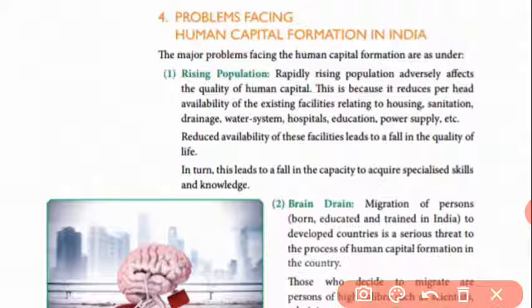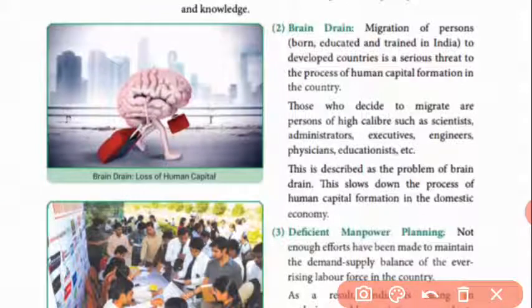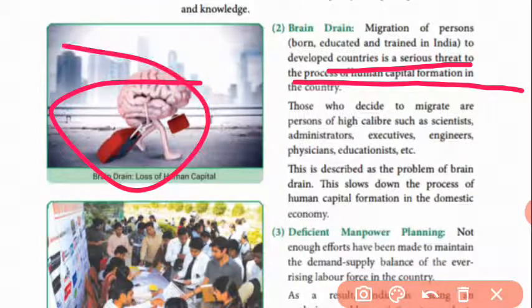The second problem is brain drain. Brain drain means migration of persons born, educated, and trained in India to developed countries. This is a serious threat to the process of human capital formation — the educated people of India are moving abroad, meaning the resources of our country are giving benefit to other countries.